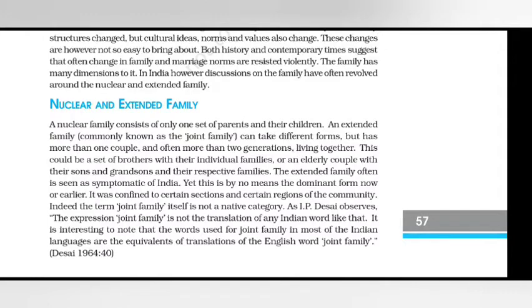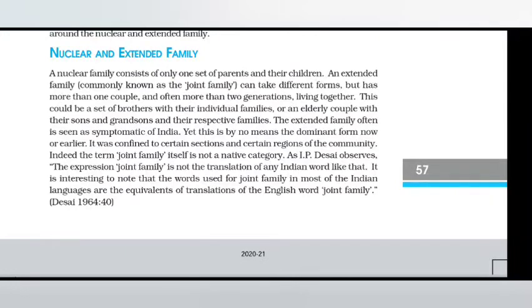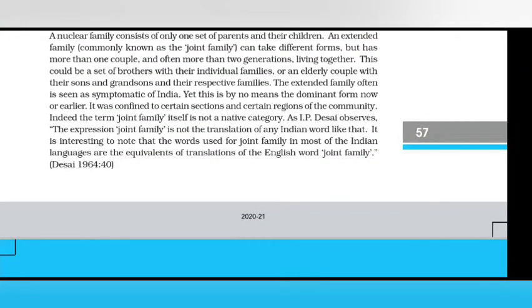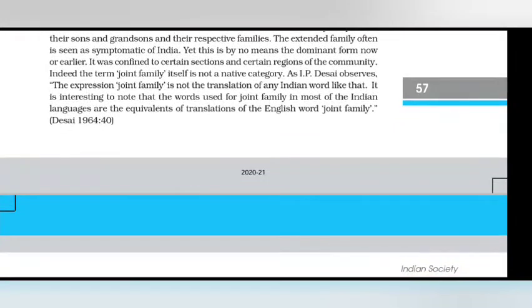Nuclear and extended family. A nuclear family consists of only one set of parents and their children. An extended family, commonly known as joint family, can take different forms but has more than one couple and often more than two generations living together — such as a set of brothers with their individual families, or an elderly couple with their sons and grandchildren and their respective families. The extended family is often seen as synonymous with India, though this by no means is the dominant form now or earlier — it was confined to certain sections and certain regions.